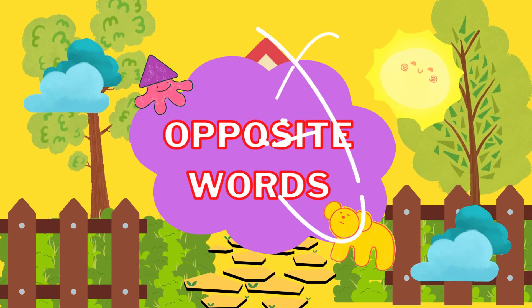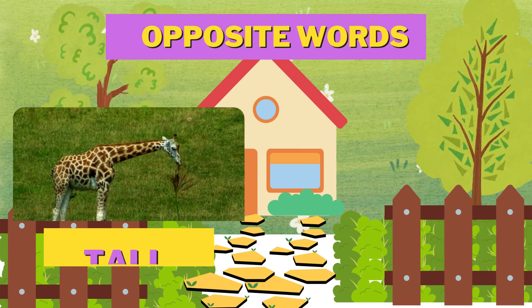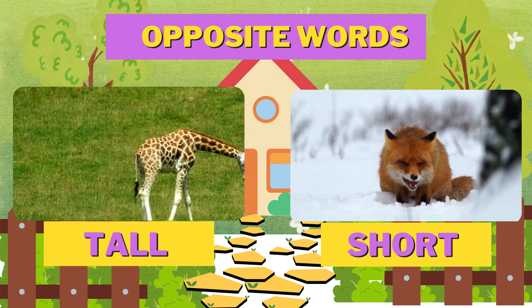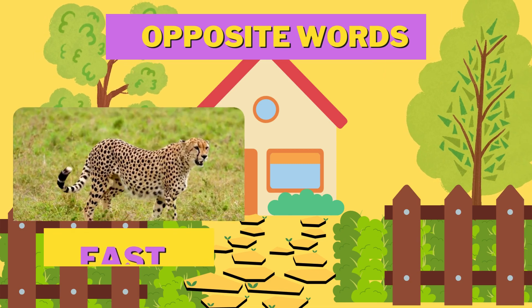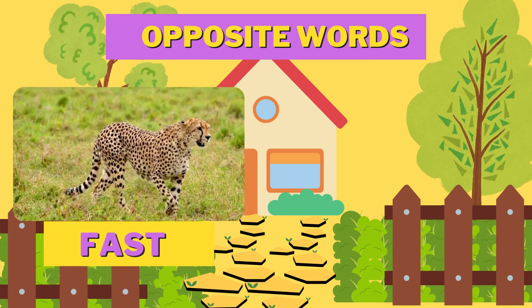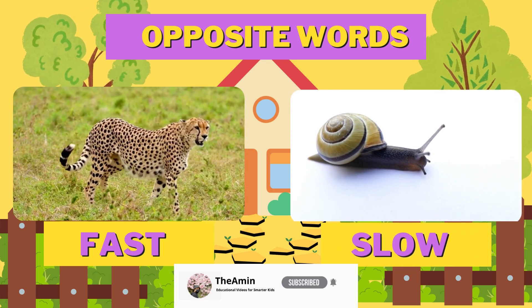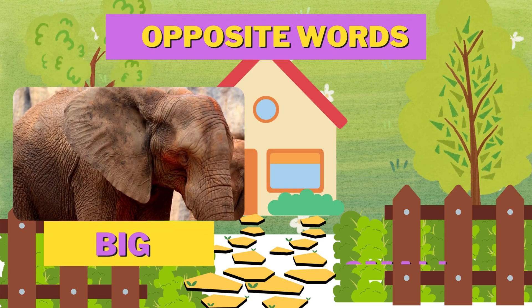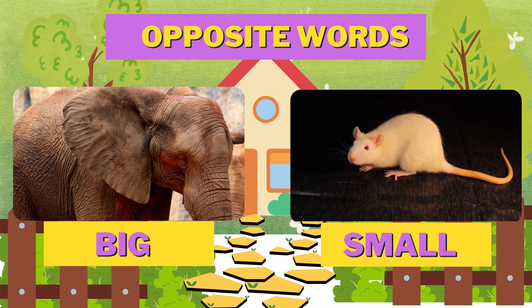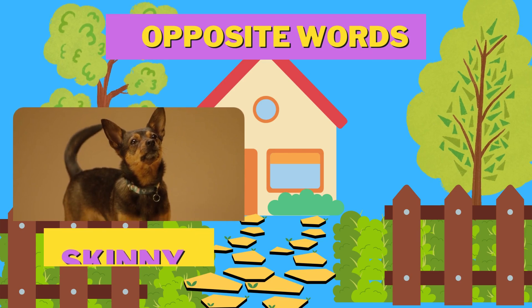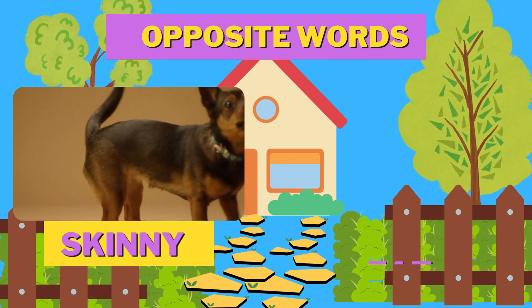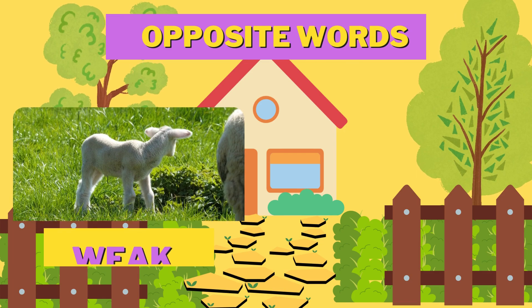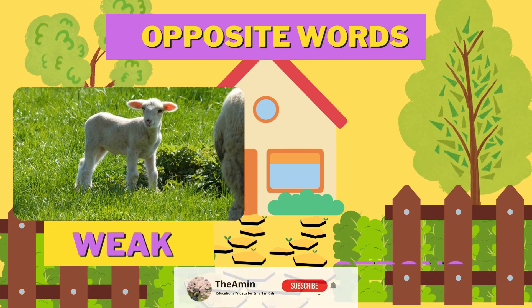Let's learn opposite words in English. Small. Skinny. Fat. Big. Strong.